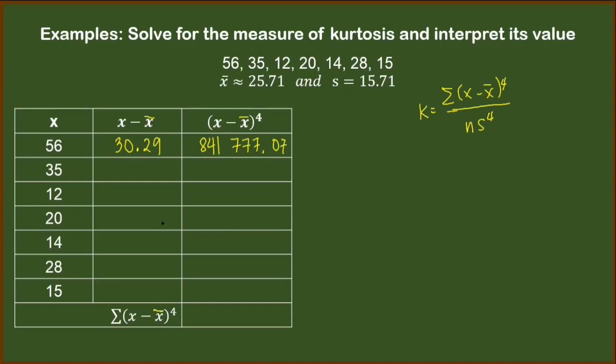Next, we have 35 minus 25.71. That will result to 9.29. Raise this to the 4th power. We have 7,448.40.